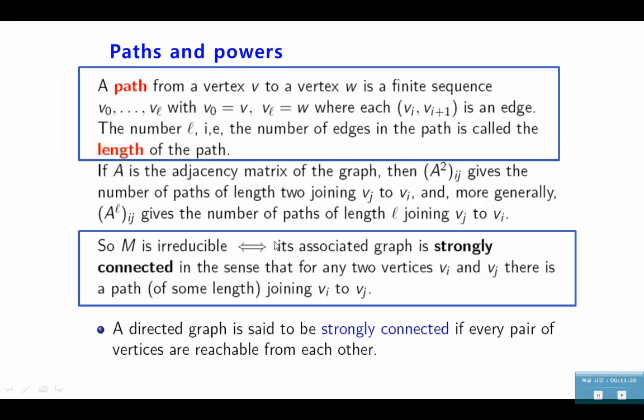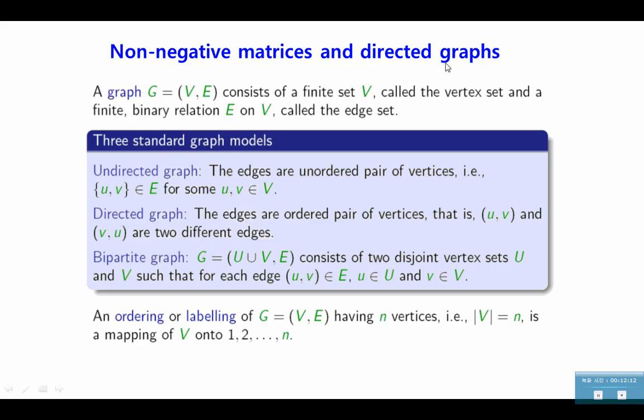If M is, we have covered this when we dealt with the Perron-Frobenius theorem. The matrix M is irreducible if and only if its associated graph is strongly connected. In the sense that, for any two vertices, Vi and Vj, there is a path joining Vi to Vj, of some length. So, if in the graph, if you can go from any vertex to any other vertex, by passing through those edges, then we call this graph, the associated graph is strongly connected. In that case, the corresponding matrix is irreducible. A directed graph is said to be strongly connected if every pair of vertices are reachable from each other.